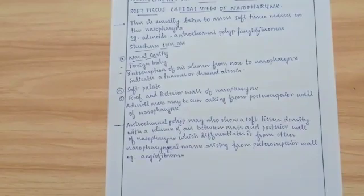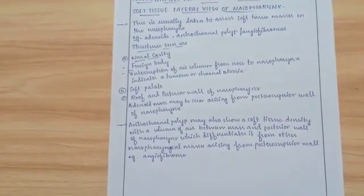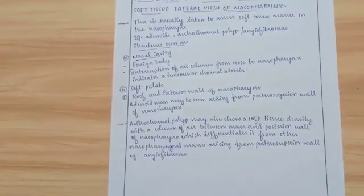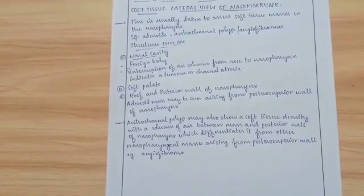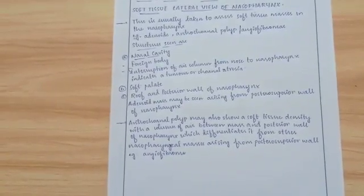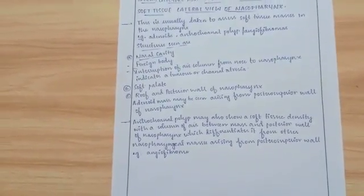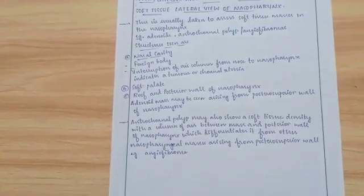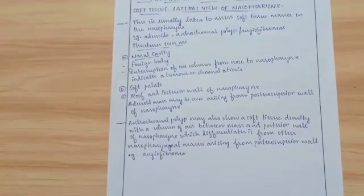Structures seen include the nasal cavity. Foreign bodies can be identified. Interruption of the air column from nose to nasopharynx indicates a tumor or choanal atresia. Also visible are the soft palate, roof and posterior wall of nasopharynx.